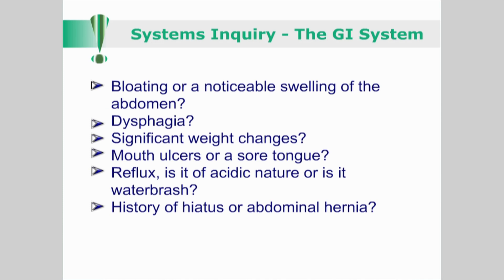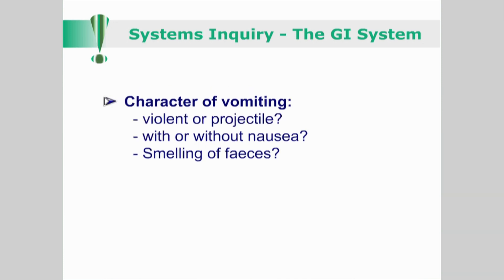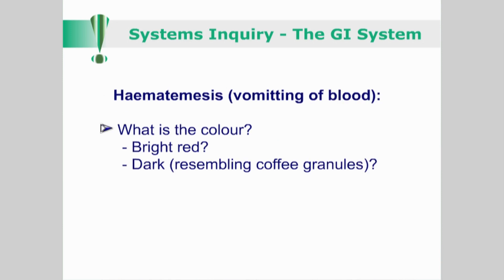Do they experience dysphagia, that is problems with swallowing? Has the patient noticed any significant weight changes, and are the reasons for these known? Is the patient troubled by mouth ulcers or a sore tongue? Do they suffer from reflux, and if so, is it of acidic nature or is it water brash? Is there a history of hiatus or abdominal hernia? Do they suffer from undue nausea or vomiting? If so, is the nausea related to particular types of food, beverages or is it drug related? Inquire about the character of vomiting — is it violent or projectile, with or without nausea, or does it smell of faeces? Any hematemesis, that is the vomiting of blood? If so, what is the colour — is it bright red or dark and resembling coffee granules?